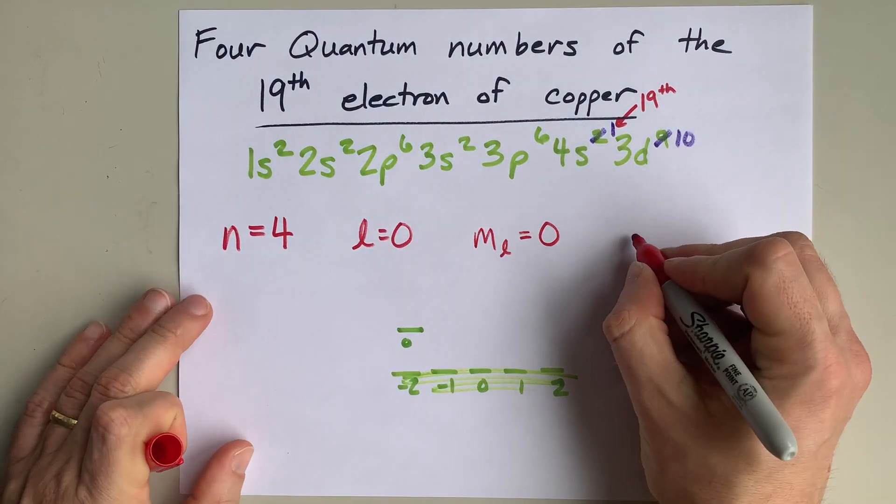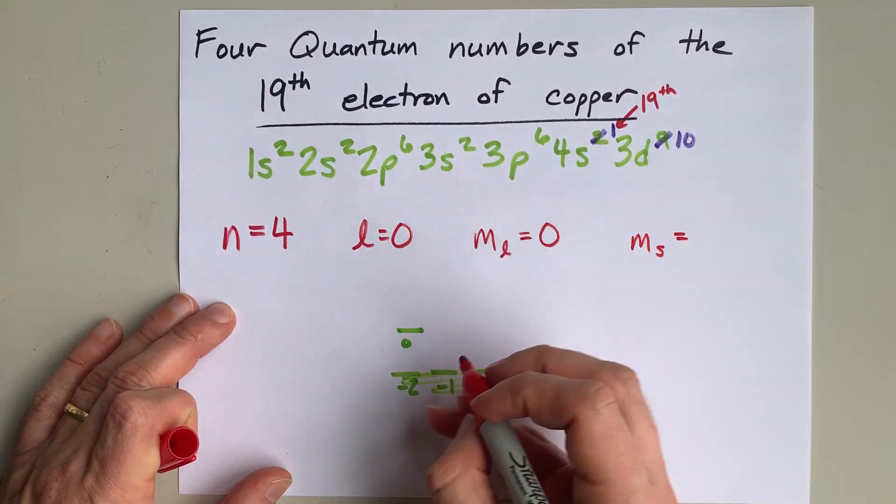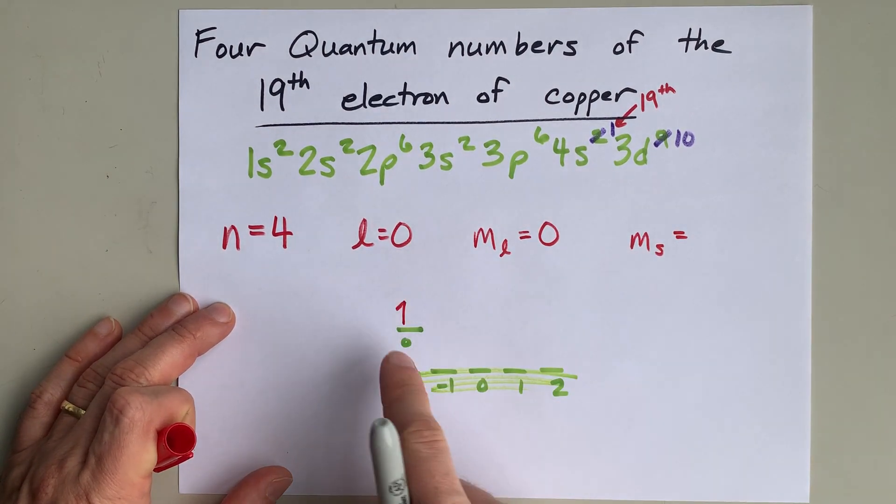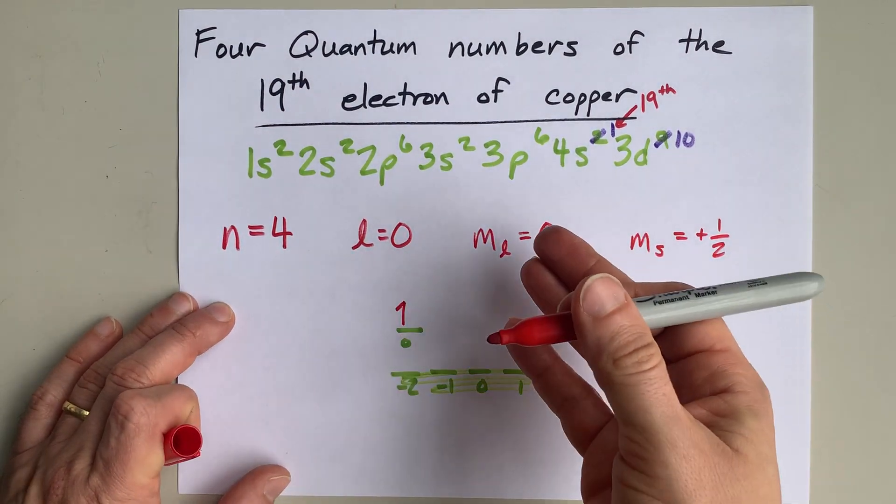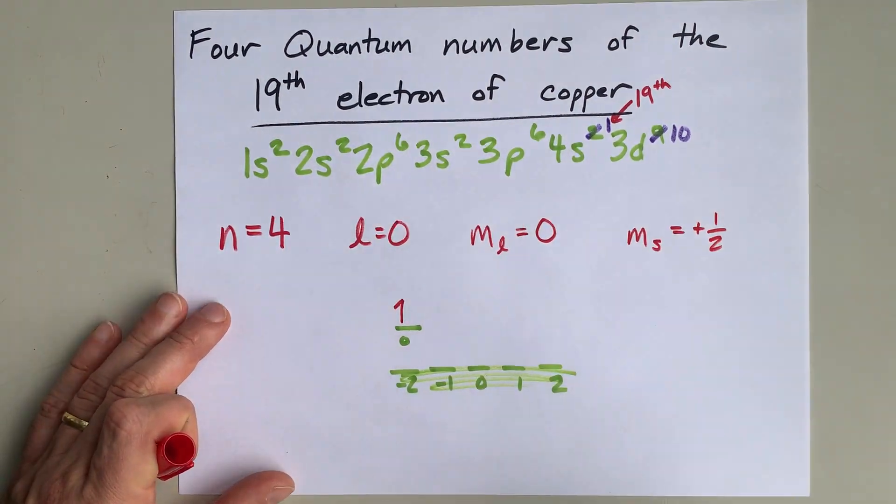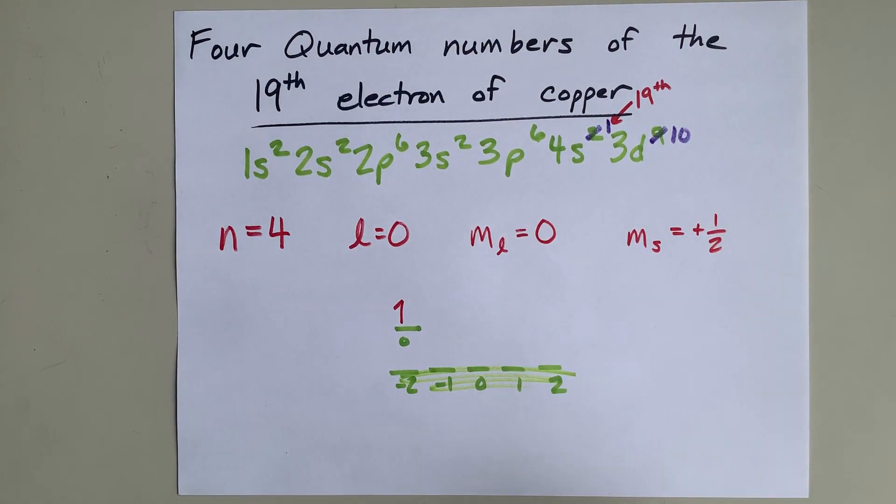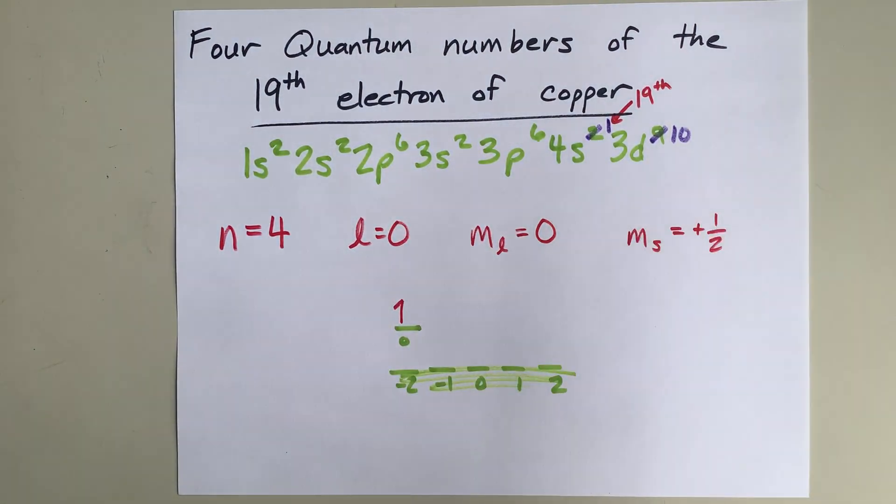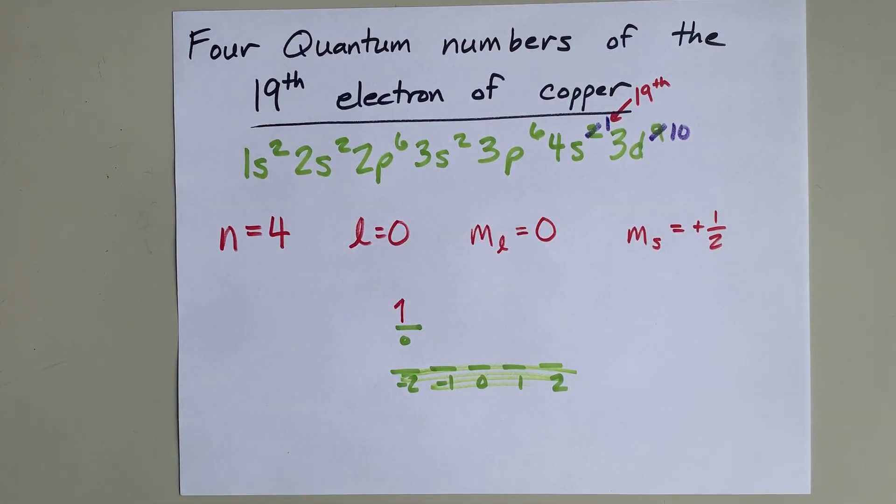And then you're being asked about the final quantum number, MS. Now, I don't have a rule for whether or not you use plus a half, an up electron, as the first electron in the orbital, or if your teacher tells you to do a down or negative a half spin to start with. You're going to have to base that off of whatever your teacher's examples have been. If your teacher does this kind of arrow to start with in an orbital, use plus a half. If your teacher starts with a down arrow, use minus a half, because that's probably what they're expecting. But in my world, you should be allowed to use either plus a half or minus a half for that 19th electron.